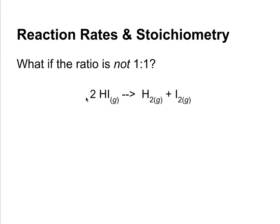But what if that ratio is not one-to-one? For example, in this reaction, we've got the coefficient of two in front of hydrogen iodide gas as it decomposes into hydrogen and iodine gas. So what this means is it takes two HI molecules to produce one H2 and one I2 molecule.